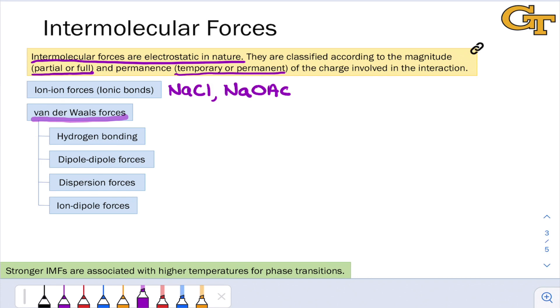Generally, the strongest of the van der Waals forces are hydrogen bonds. And this is a special type of dipole-dipole interaction involving most commonly an OH, NH, or FH bond, as well as a lone pair on oxygen or nitrogen.